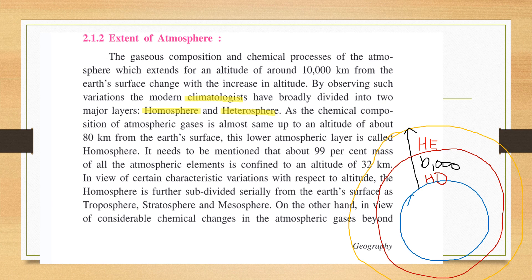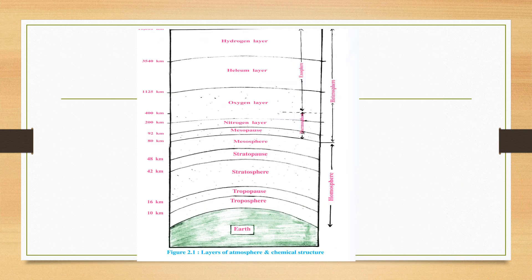As the chemical composition of atmospheric gases is almost same up to an altitude of about 80 km from the Earth's surface, this lower atmospheric layer is called homosphere. It needs to be mentioned that about 99% mass of all the atmospheric elements is confined to an altitude of 32 km. So about 80 km, we can say that there is a homospheric layer. And in only 32 km, the maximum mass of all the atmospheric elements is concentrated. In the lower layer, we get more concentration. In view of certain characteristic variations with respect to altitude, the homosphere is further subdivided serially from Earth's surface into troposphere, stratosphere and mesosphere. Do remember that.